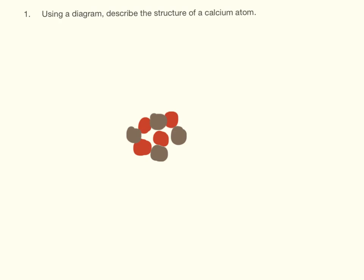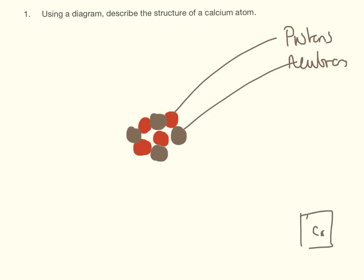So here we are going to have our calcium atom. We are going to have protons and neutrons in the middle here, and if we look at our periodic table, we will see that calcium has a mass number of 40 and an atomic number of 20, which means it's going to have 20 protons and 40 minus 20 equals 20 neutrons.